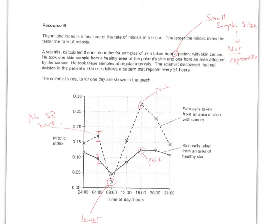The next graph is looking at the mitotic index of normal cells versus cancerous cells. One of the questions says to compare and contrast the two curves. So it's similarities and differences that we've got.